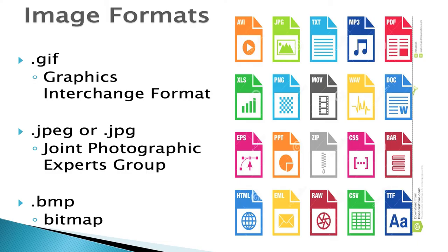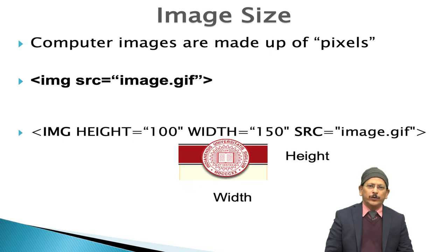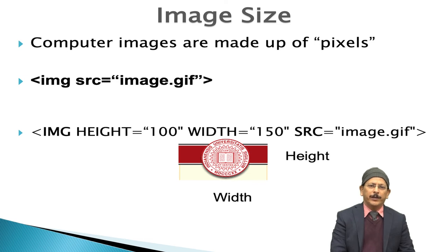We can use different image formats in HTML like GIF, JPEG, and BMP. The statement is: IMG src equals image.gif — and the GIF image will be displayed. We can write the path of the image where it is stored. We can also apply height and width attributes to specify the size of the image.